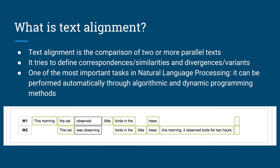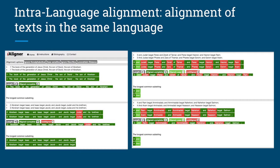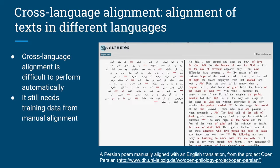We will see how we can perform alignment automatically. First, intralanguage alignment: when the two texts are in the same language, we call it intralanguage alignment. For example, aligning the many translations of the Bible to see the similarities and differences between them. We have cross-language alignment when we have two different languages — as seen in this image, it's alignment between Persian and English. Cross-language alignment is very important because it can help us create training data for automatic translation systems.